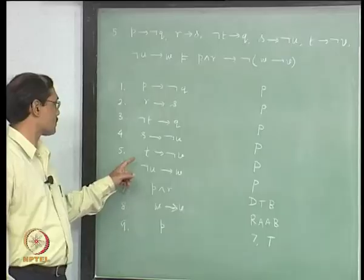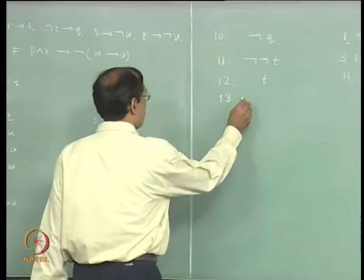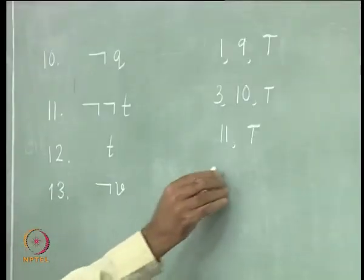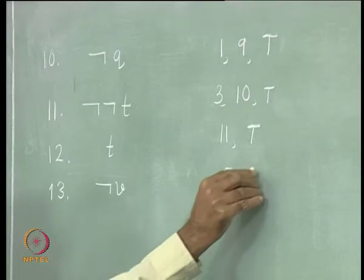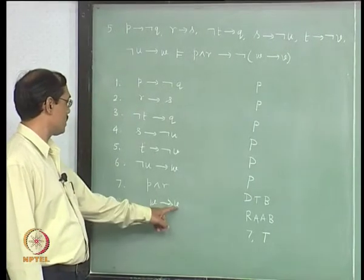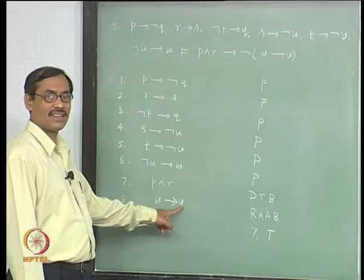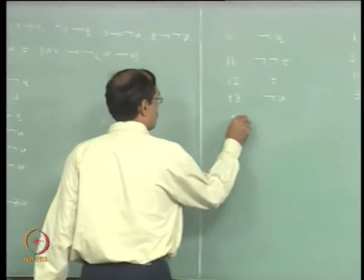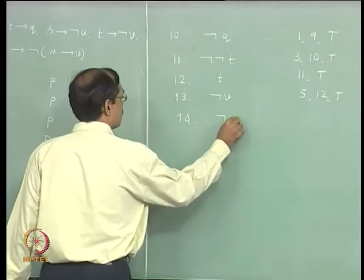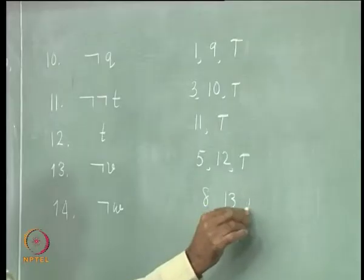What is our plan? Here we can use modus ponens. So that will give us not v, from line 5 and line 12 by modus ponens. Next, how do you use not v? Well, you can use modus ponens again. So line 14 gives not w, and we are using from lines 8 and 13 by modus ponens.